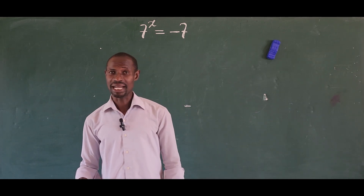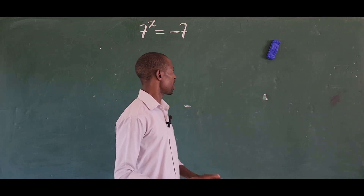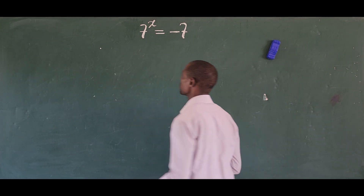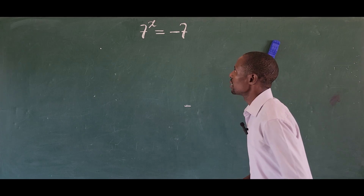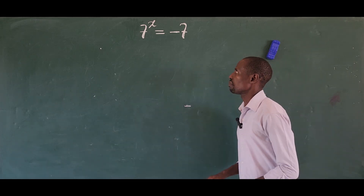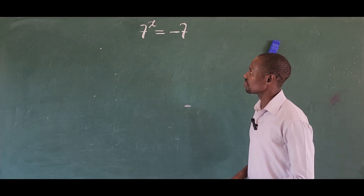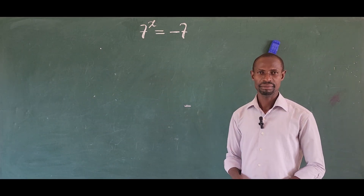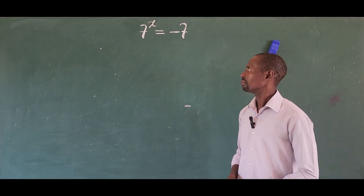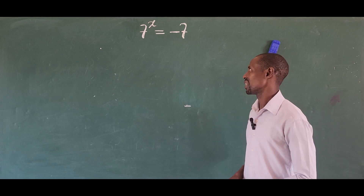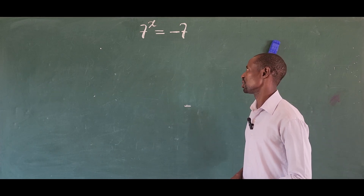Hello and welcome to today's smart class. Today we have this challenge before us: the question is 7 to the power of x equal to minus 7. So what is the value of x that will satisfy this challenge?